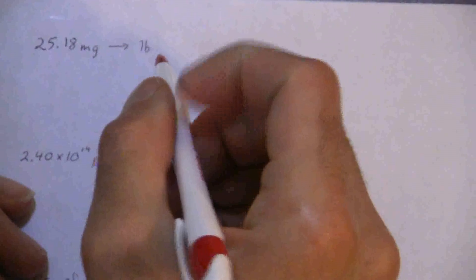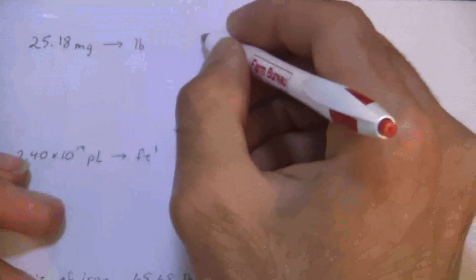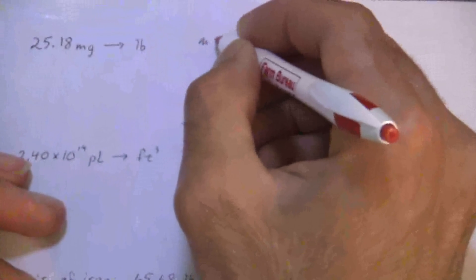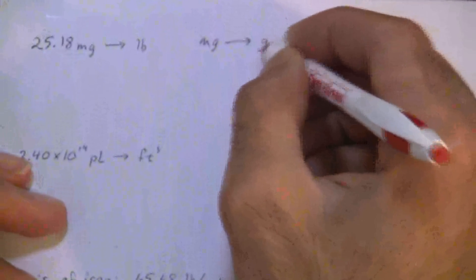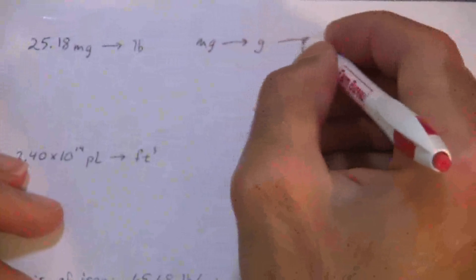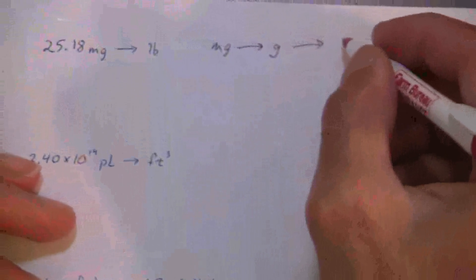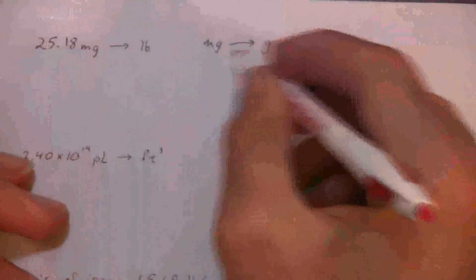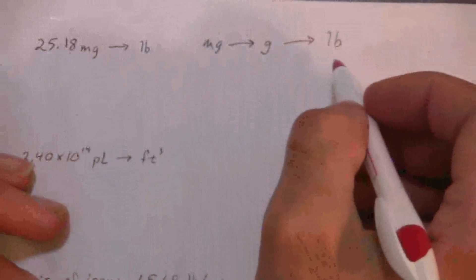All right, so what I can do is say I'm going to take this for milligrams. I'm going to go to grams. I know that conversion and then I'm going to go from grams to pounds. All right, so this will just be a two-step process really not too involved at all.